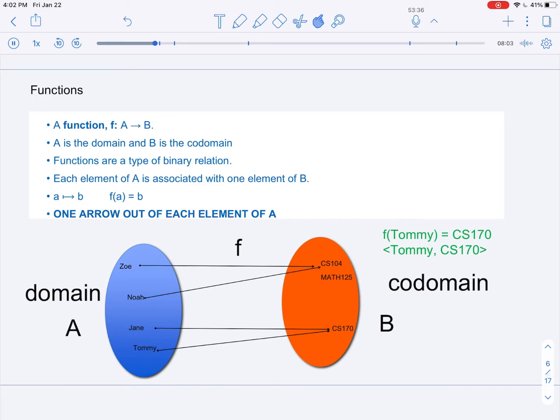But it's also fine to denote this function as an ordered pair. So it would be the ordered pair Tommy, CS-170. That is a way to remember that the function is essentially a binary relation.